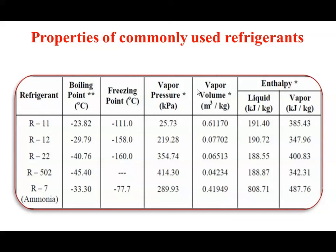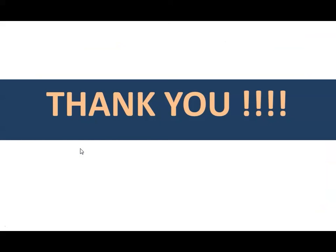Commonly used refrigerants in VCR systems include R11, R12, R22, R502, R717 (ammonia). Their boiling points are all negative — in negative temperature range. The table shows their properties: boiling point, freezing point (as low as -111 degrees centigrade), vapor pressure, vapor volume, and enthalpies. These are the properties of commonly used refrigerants in VCR systems. Thank you — that was all about today's topic.